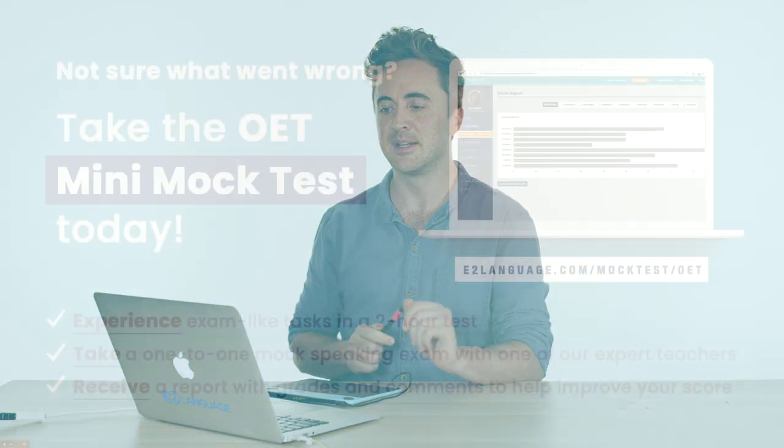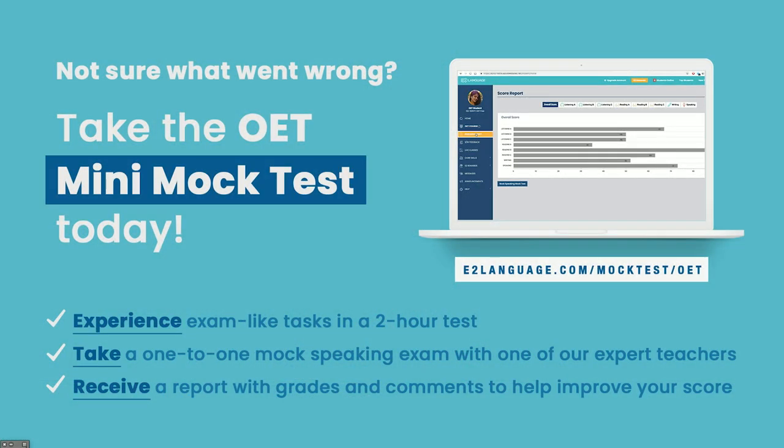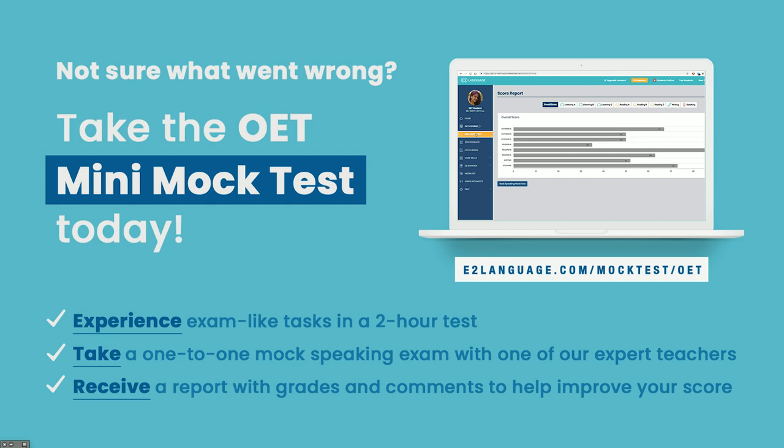All right, how did you go? Hopefully you got six correct. As I said at the beginning, Listening Part A is the easiest of the listening subtests, and you really should be aiming to get full marks. You can pop your number into the comments below if you like. Also, in the description below you're going to find a link to a blog about Listening Part A with lots of useful tips, so you might want to check that out. And finally, just one more reminder — if you are taking the OET test, check out our mini mock test with feedback; it is the best possible way to begin your preparation. My name is Jay. Thanks for watching. I'll see you next time.